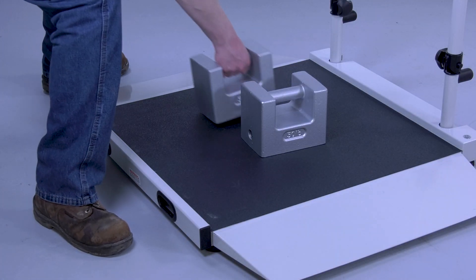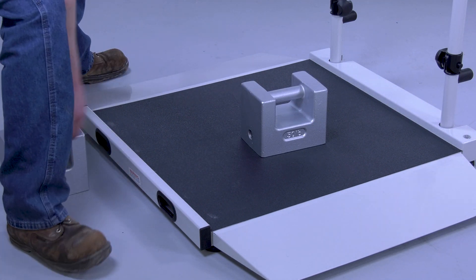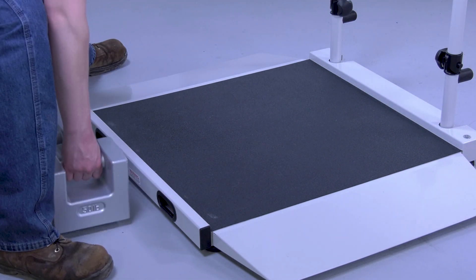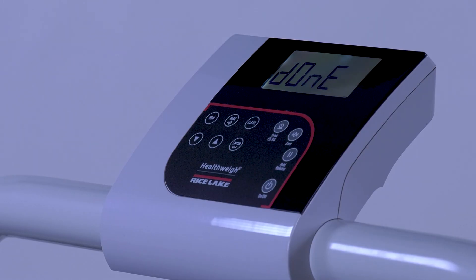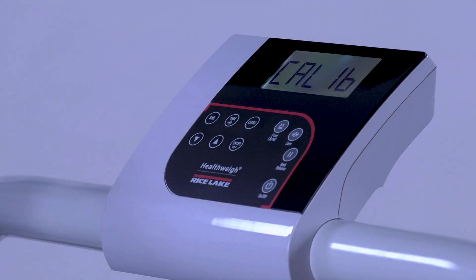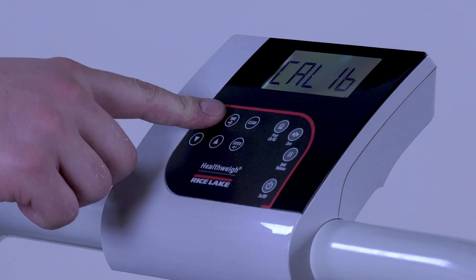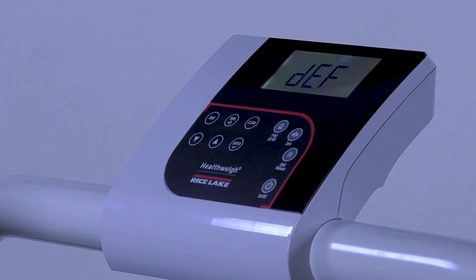Remove the calibration weights from the scale. Press the BMI key three times to exit. Then press Enter to return to weigh mode.